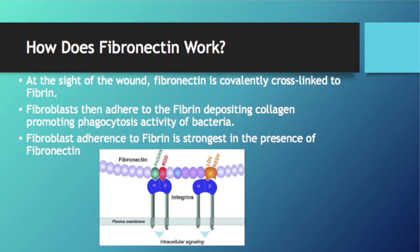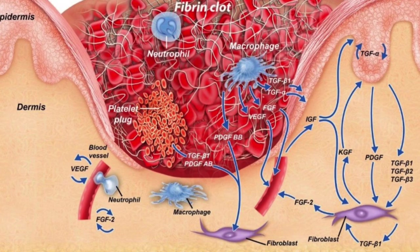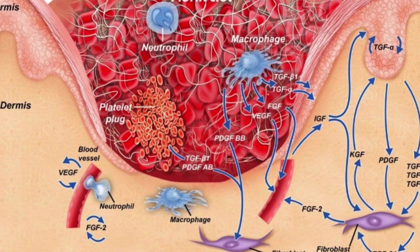So how exactly does Fibronectin work? Fibronectin promotes the activities of other wound healing proteins. During blood clotting, Fibronectin is covalently cross-linked to a protein called Fibrin. Fibrin is an insoluble protein that forms a fibrous mesh, impeding the flow of blood.